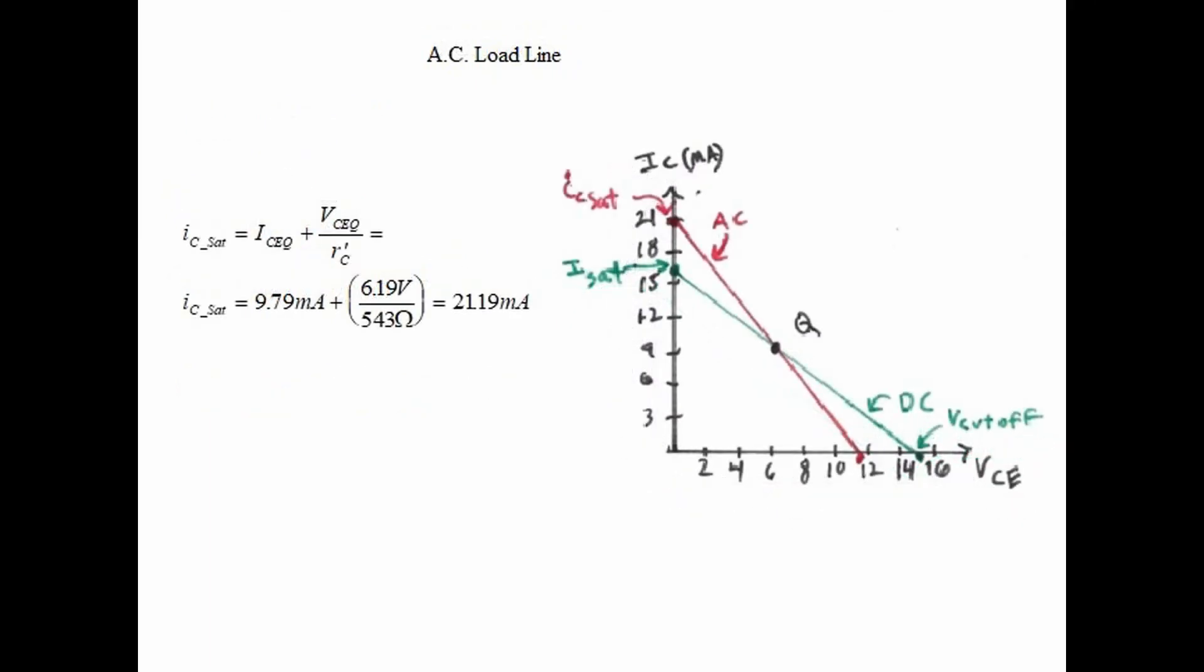We now calculate the AC load line and we will plot it on top of the DC load line using the same graph. To find the AC load line we simply calculate AC current saturation which equals ICEQ plus VCEQ divided by R prime C. So in this case the AC current saturation is 21.19 milliamps.